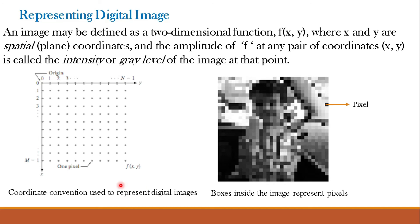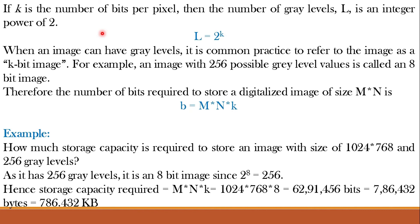We can represent an M×N digital image as a compact matrix. When x (the row coordinate), y (the column coordinate), and the amplitude values of f are all finite discrete quantities, we call the image a digital image. We represent any digital image by the number of bits. If k is the number of bits per pixel, then the number of gray levels L is equal to 2 raised to k. For an 8-bit image, L equals 2 raised to 8, which is 256. For a binary image with 1 bit, L equals 2, giving only black and white. An image with 256 possible gray level values is called an 8-bit image.